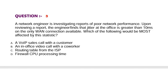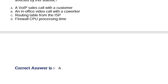Question: A network engineer is investigating reports of poor network performance. Upon reviewing a report, the engineer finds that jitter at the office is greater than 10 ms on the only WAN connection available. Which of the following would be most affected by this statistic? Option A, a VoIP sales call with a customer. Option B, an in-office video call with a co-worker. Option C, routing table from the ISP. Option D, firewall CPU processing time. Correct answer is Option A.